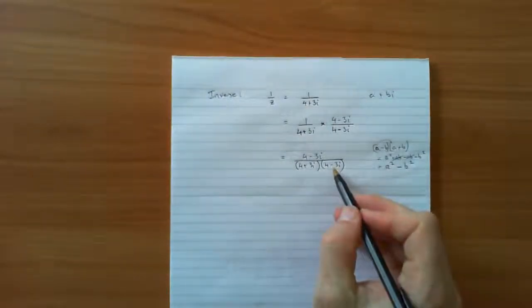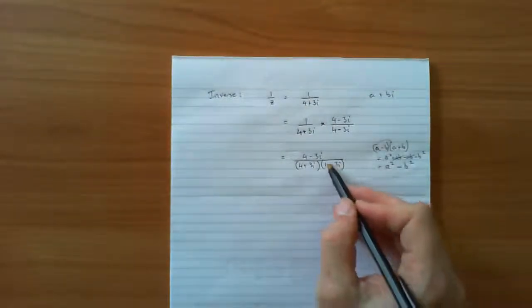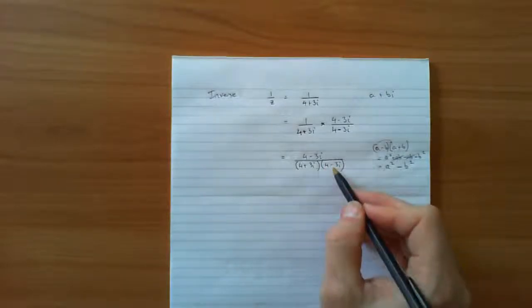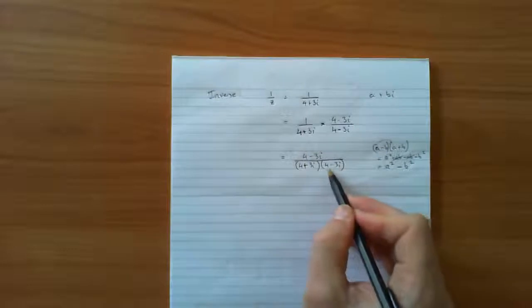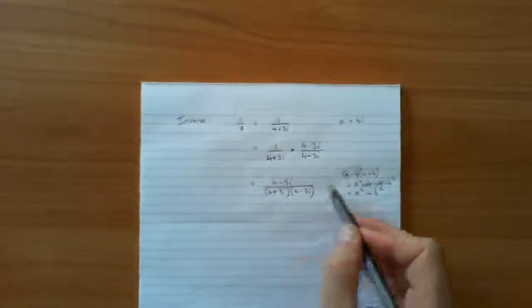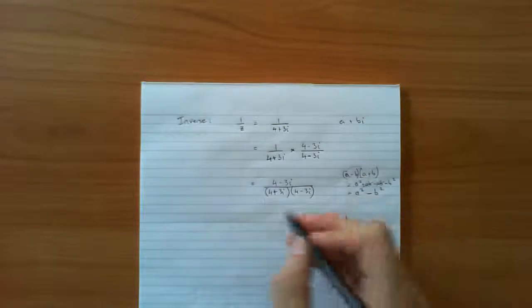So the whole reason we, coming back to this problem, the whole reason we multiplied by the 4 minus 3i is so that we got a difference of two squares on the bottom here. 4 plus 3i, 4 minus 3i, just like the a minus b, a plus b. So the top stays the same.